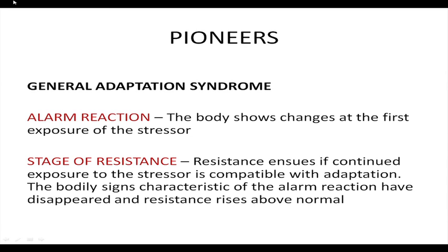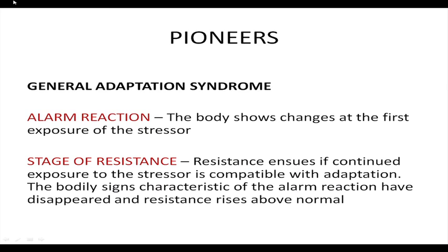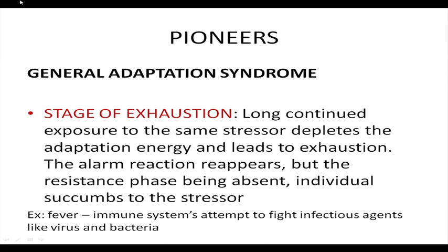The General Adaptation Syndrome has three phases. The first is the alarm reaction, where the body shows changes at the first exposure to a stressor — the body identifies a stressful stimulus. The next stage is resistance, where the body tries to fight the stressor and adapt to the stressful situation; resistance rises higher than normal. After that is exhaustion, where a long-continued stressful situation depletes the body's energy.